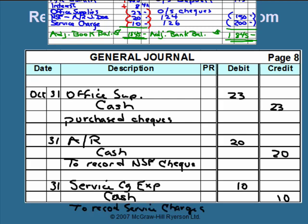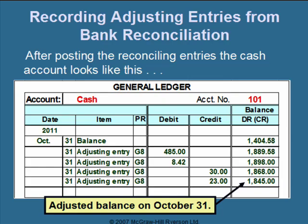After recording all journal entries, we post them to the general ledger. The new balance in the general ledger cash account is $1,845, which matches the adjusted balance calculated on our bank reconciliation.